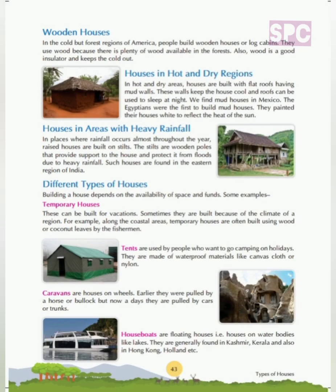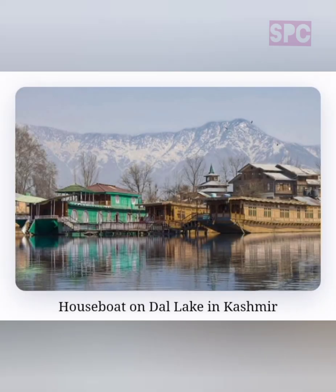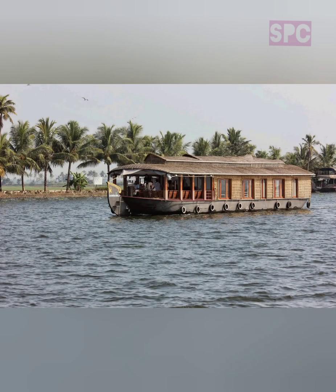Houseboats are floating houses — that is, houses on water bodies like lakes. They are generally found in Kashmir, Kerala and also in Hong Kong, Holland, etc. A houseboat is a combination of a boat and a house. In India, several houseboats can be found floating on Dal Lake and the backwaters of Kerala. These houseboats are specifically designed using wood, ropes, bamboo poles, mats, carpets, etc.